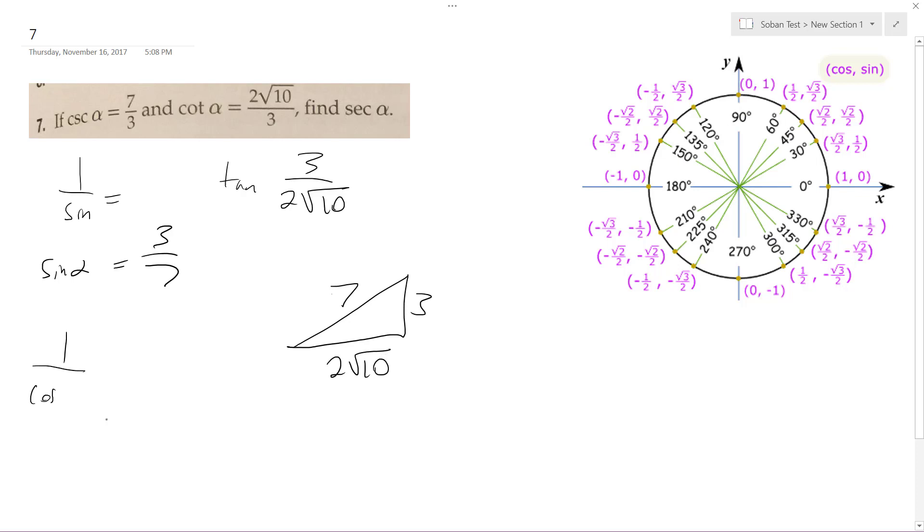We want the secant, so 1 over cosine alpha is going to be 1 over 2 root 10, which is adjacent. So I'm starting here, adjacent over hypotenuse. And then you just reciprocate that because it's on the bottom.